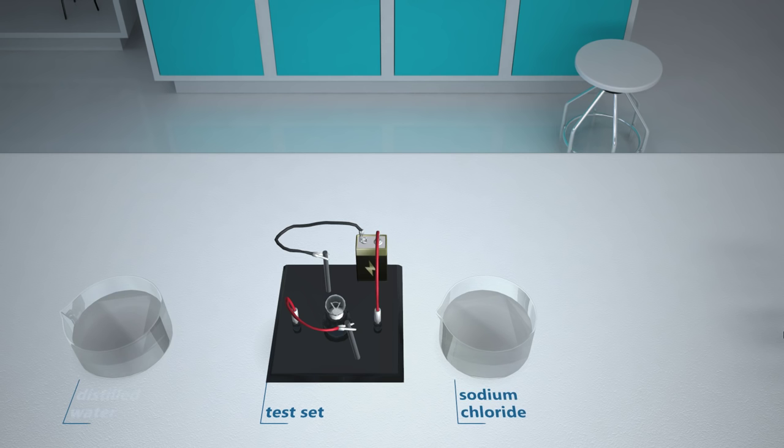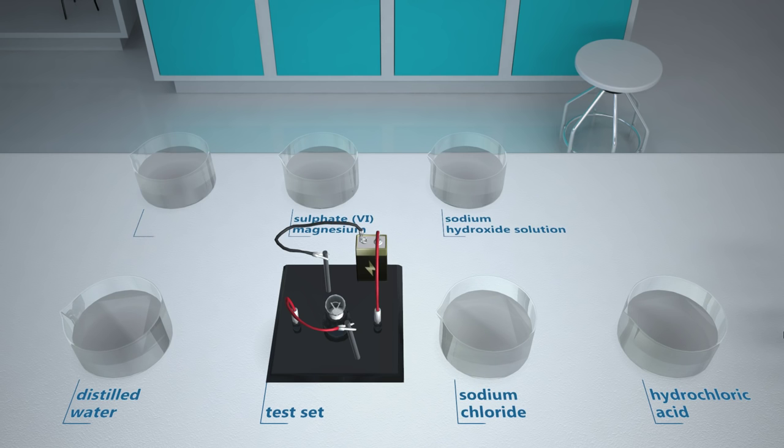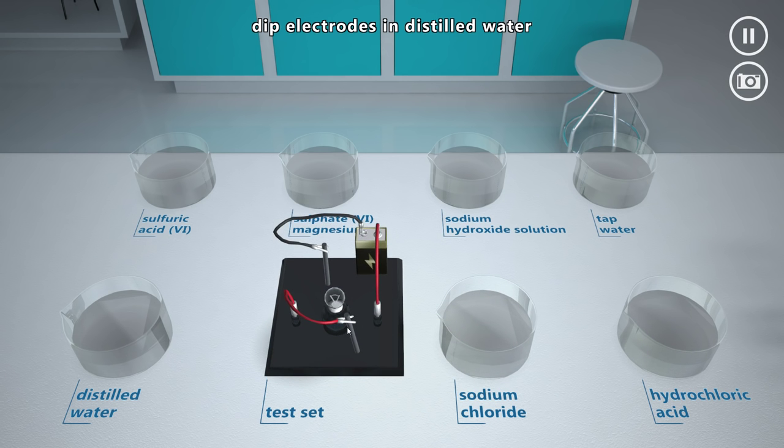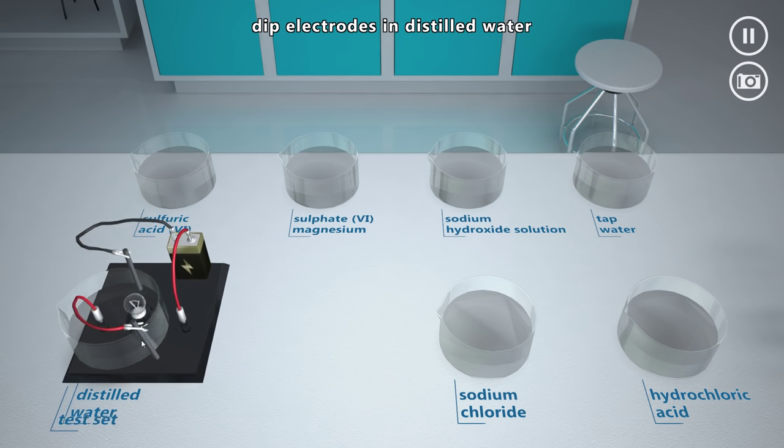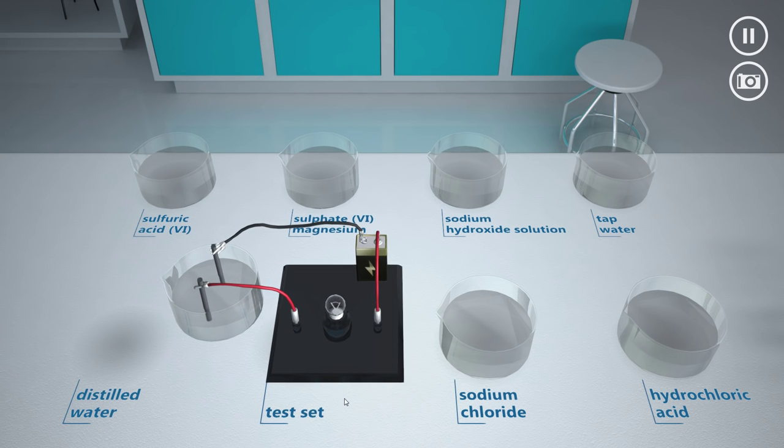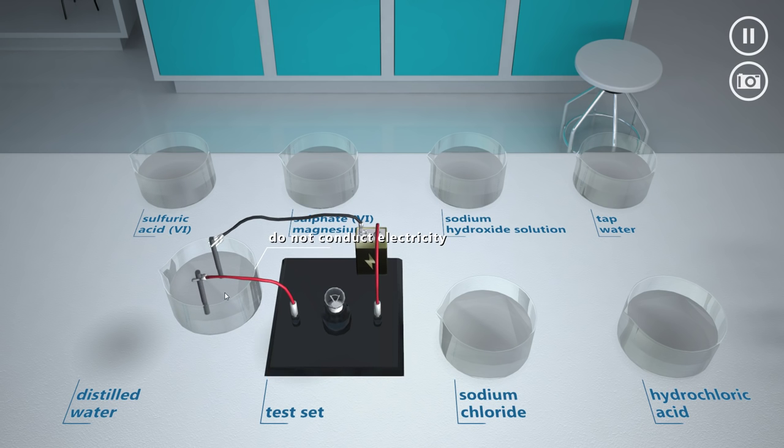Let's see what happens when we dip electrodes in distilled water. Distilled water, water which thanks to distillation does not contain mineral salts or most other substances which contaminate it, as you can see, does not conduct electricity. It is used everywhere a very high purity of water is required, car batteries or irons.